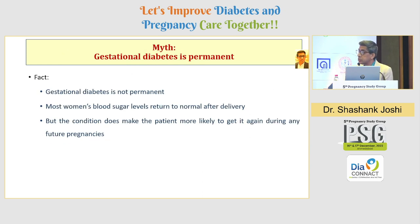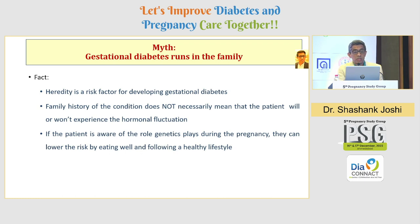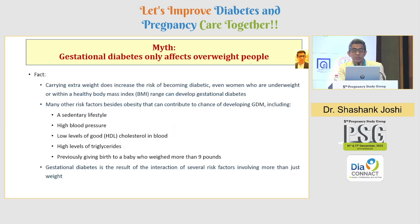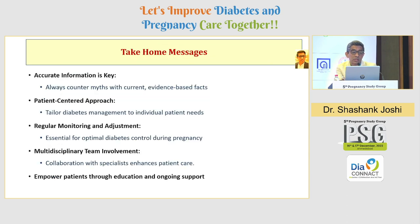Gestational diabetes is not permanent — it is an interventional factor. It can lead to a second peak, but it is not permanent. Gestational diabetes runs in families, and heredity is an important factor, but it is not necessary that if you have a family history you will get GDM — you need to follow appropriate lifestyle patterns. And finally, gestational diabetes does not only affect overweight people — lean people are affected just as much.